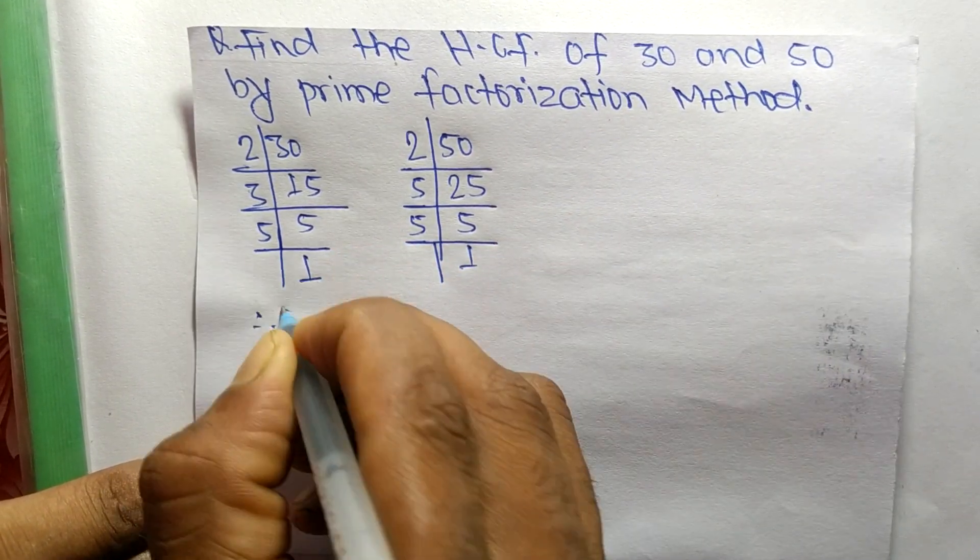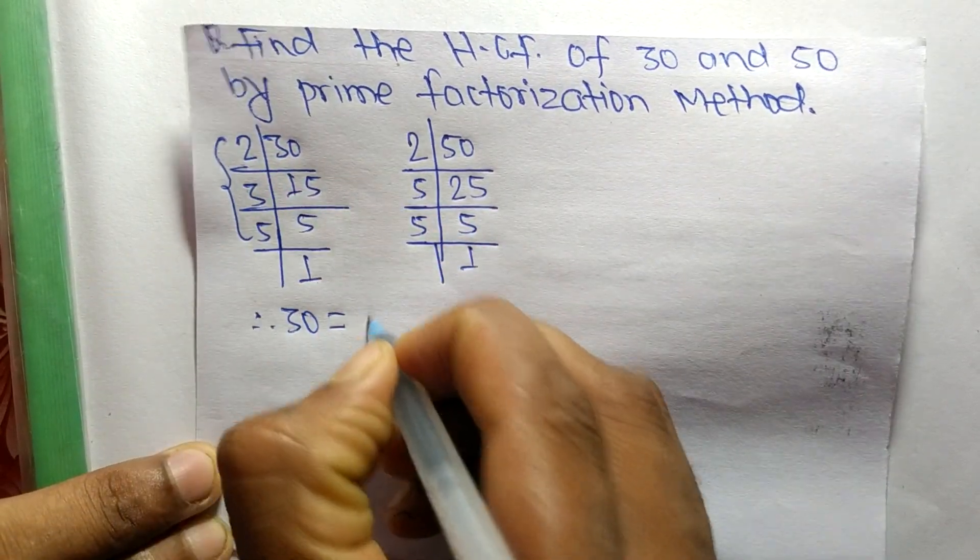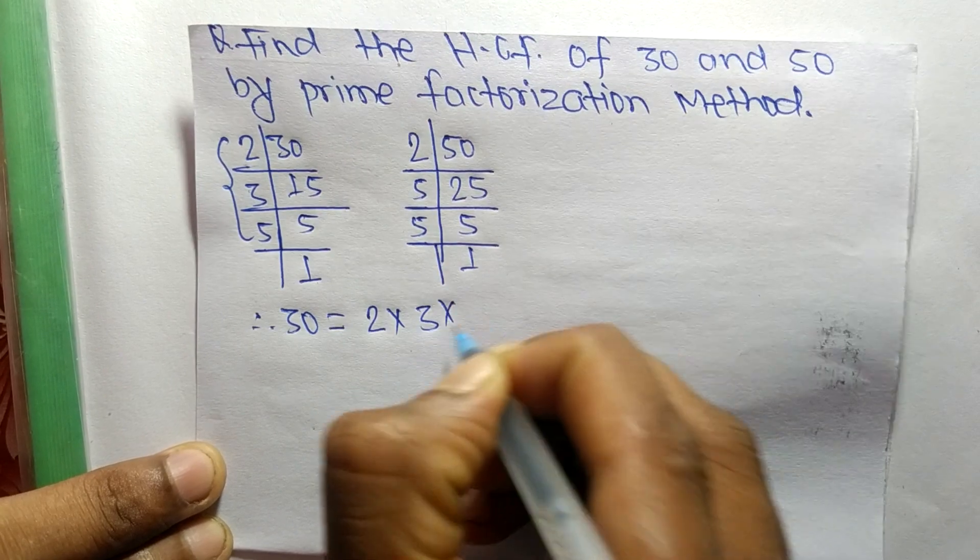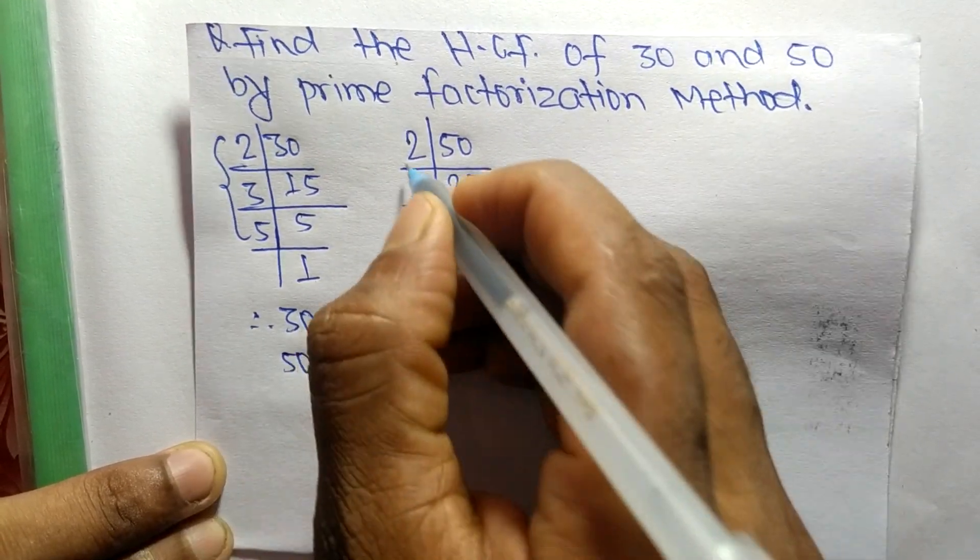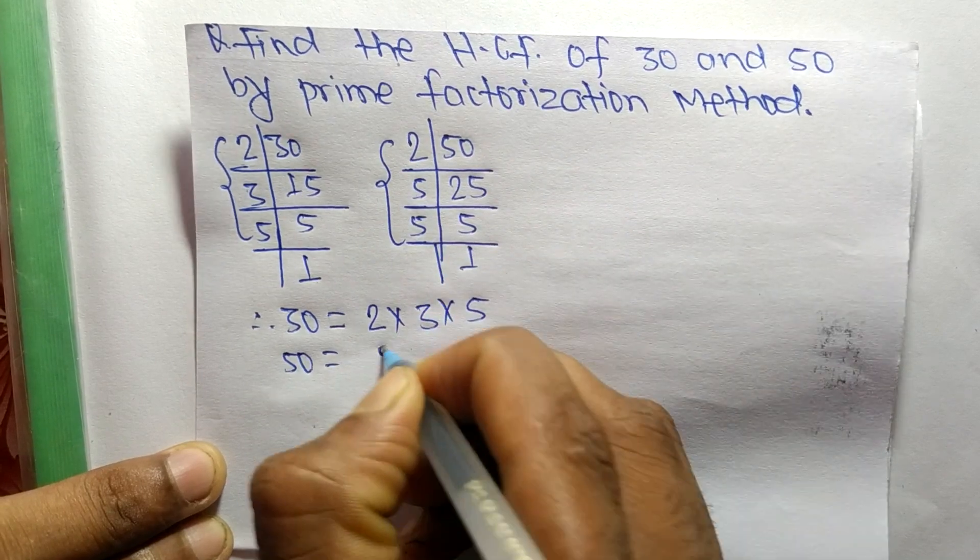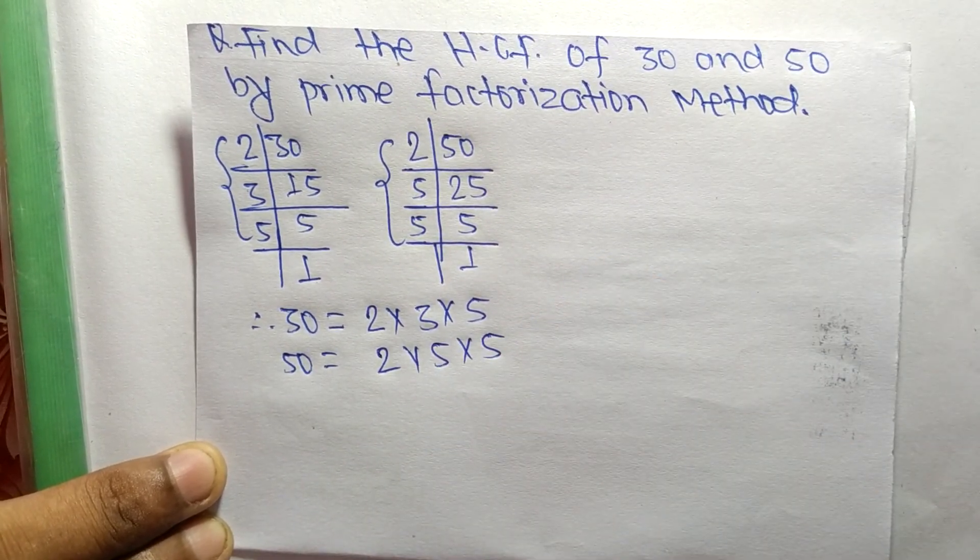So from these prime factors we can write 30 is equal to 2 times 3 times 5, and 50 is equal to 2 times 5 times 5. So now we have to find out the common factors in the prime factors of 30 and 50.